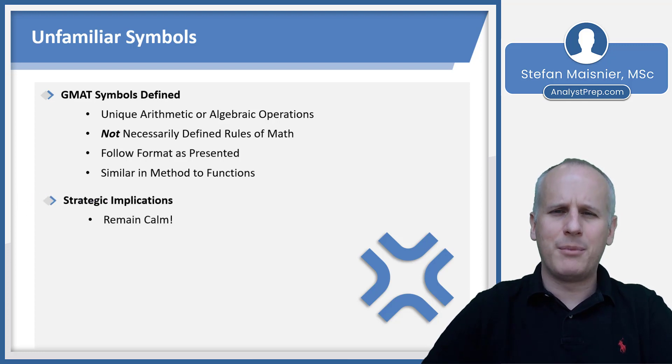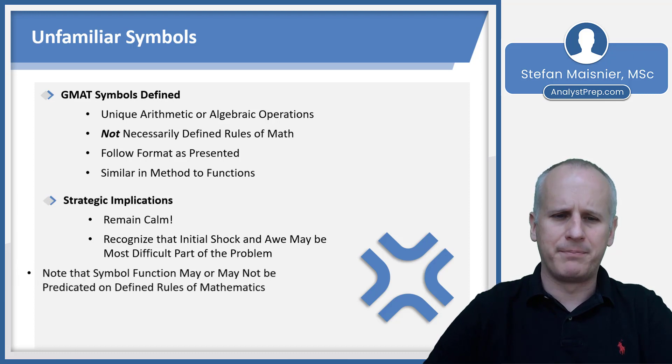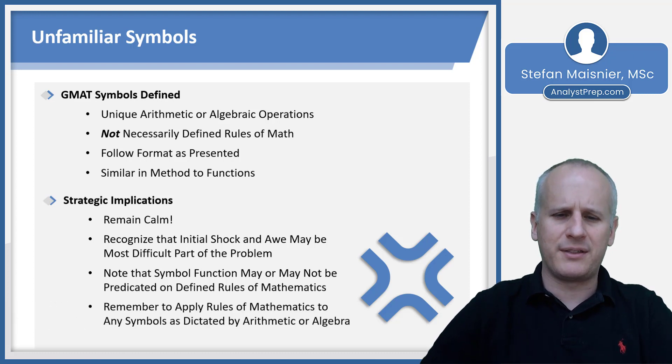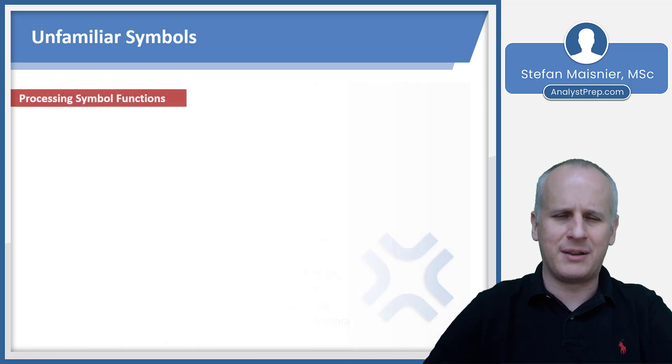Strategically, the most important aspect for all unfamiliar symbol and unfamiliar function problems is going to be to remain calm. These questions are intended to shock and awe you into basically making a mistake. The most important thing to do is recognize that whatever you have to accomplish through the symbol is right in front of you. That initial shock and awe may really be the most difficult part of the problem. The symbol function itself may or may not be predicated on the defined rules of mathematics. Of course, you have to apply the rules of mathematics to the symbols as dictated by arithmetic or algebra.